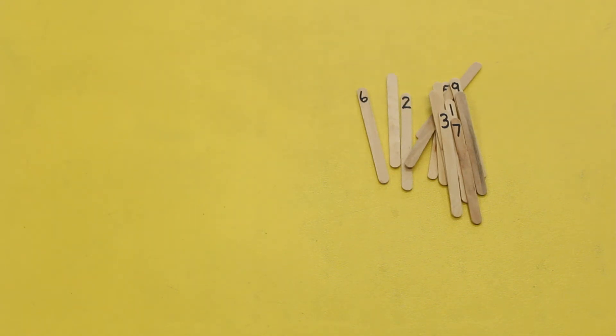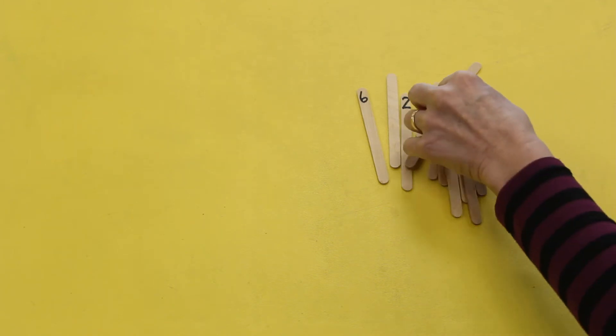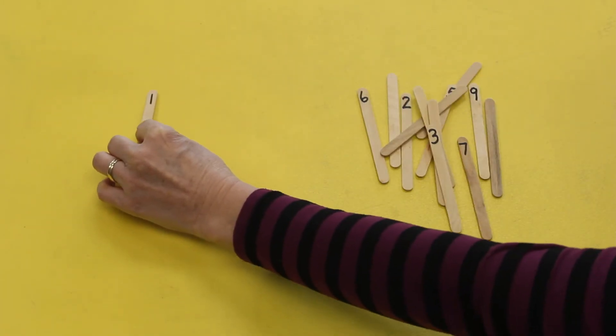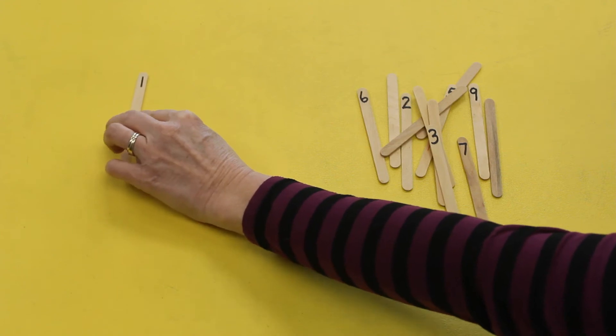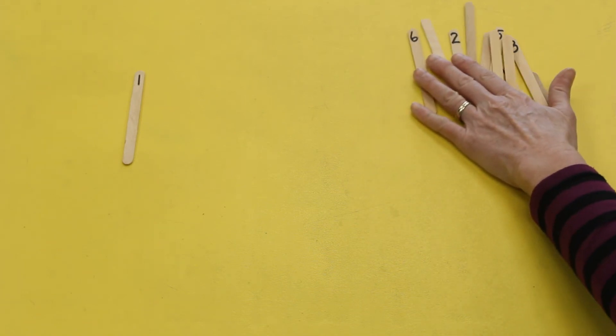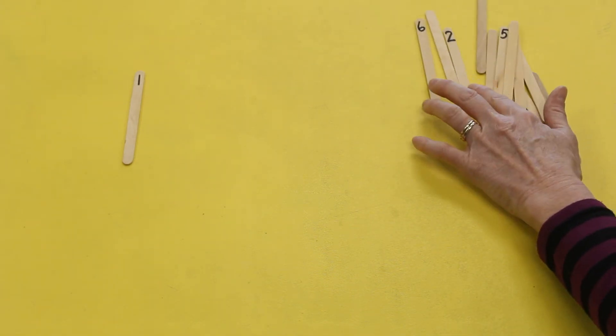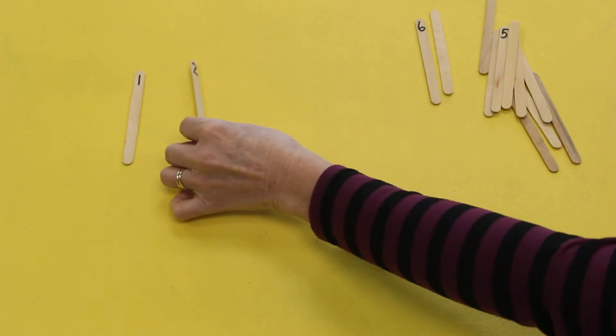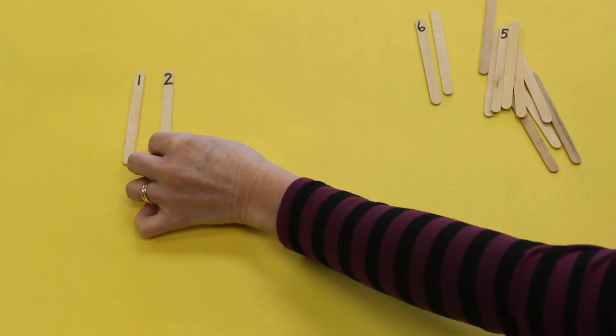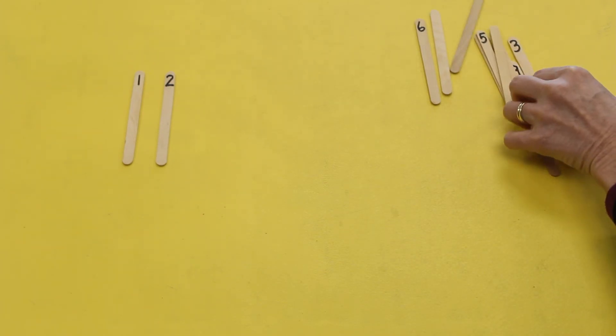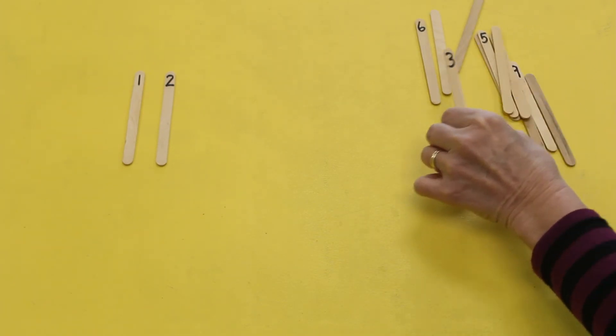Remember, we're always going to work on the left and work our way to the right. Look at your popsicle sticks and find the numeral that comes after one. Did you find two? Two comes after one. What comes next? That's right, good job.